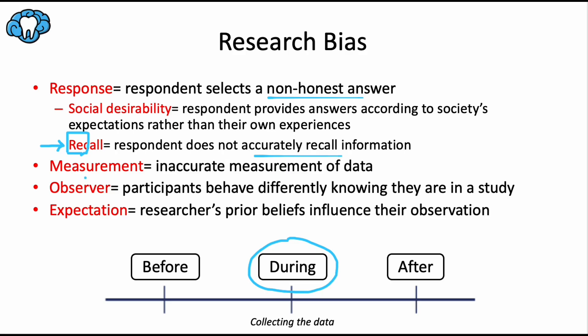Measurement bias is simply due to poorly measuring the data during the study. For example, let's say your team's portable machine to measure hemoglobin starts to malfunction and it hasn't been checked routinely as it should be every day, and so it was measuring everyone's hemoglobin as 0.3 grams per liter too high. That would lead to an underestimation of the prevalence of anemia because the readings would always overestimate the hemoglobin, and just that one mistake could have a profound effect on distorting your findings away from the truth.